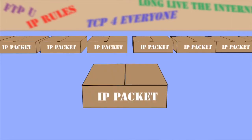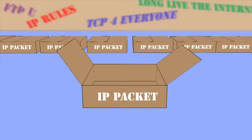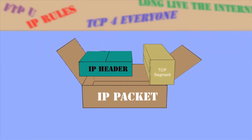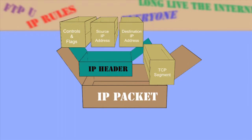The two main parts are the IP header and then the TCP segment. The IP header consists of controls and flags, as well as the source and destination IP addresses, while the TCP segment consists of the actual data along with other information, which will be explained later.